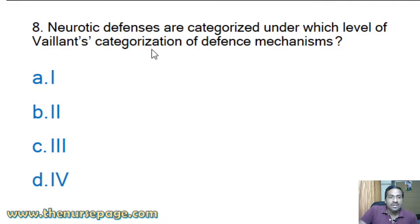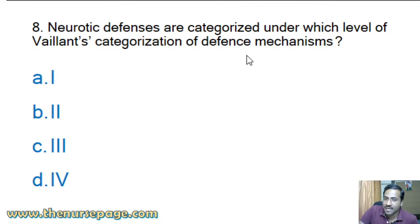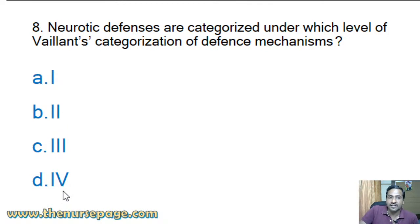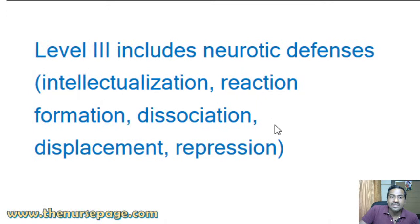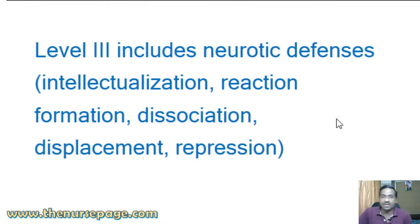Next question: 'Neurotic defenses are categorized under which level of Weyland's categorization of defense mechanisms?' Options: level one, level two, level three, level four. The answer is level three. Level three includes neurotic defenses like intellectualization, reaction formation, dissociation, displacement, repression, and many other defenses.